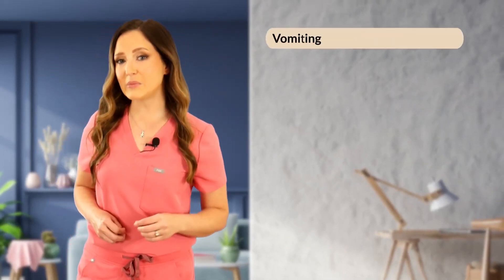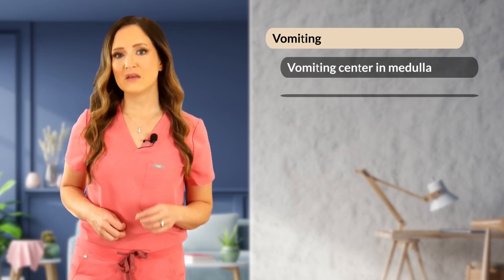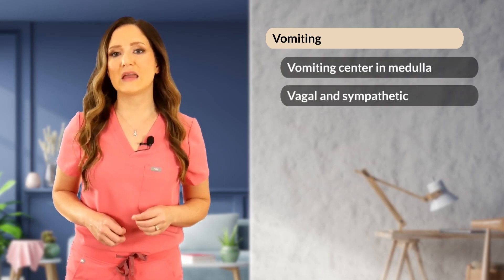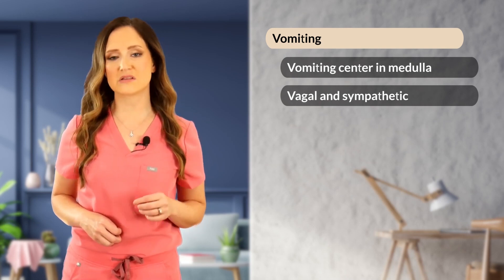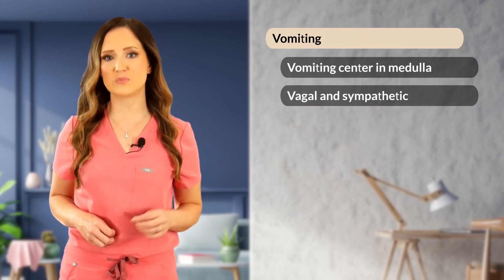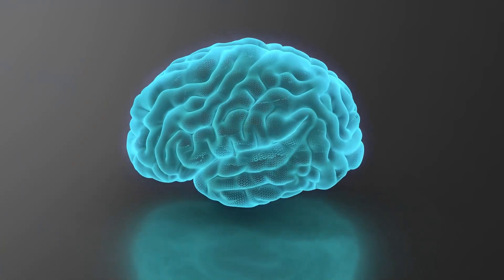Let's start with the vomiting patient by briefly reviewing the pathophysiology of vomiting. The vomiting reflex is mediated by the vomiting center in the medulla. Vagal and sympathetic afferent pathways from the stomach and intestines transmit signals to the vomiting center when stimulated by inflammation or over-distention of the gastrointestinal tract. Signals from within the brain, such as the vestibular system, cerebrum, and chemoreceptive trigger zone, also stimulate the vomiting center.